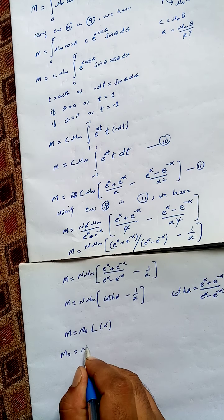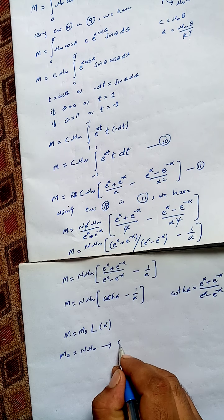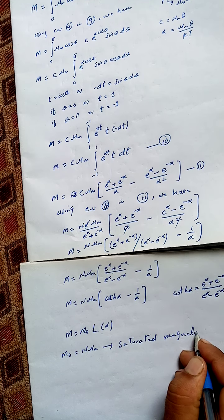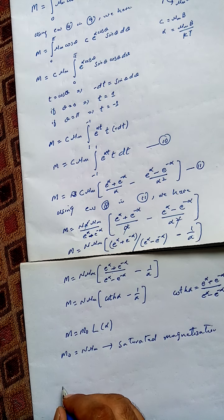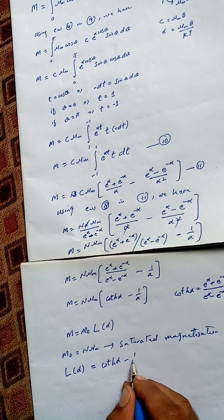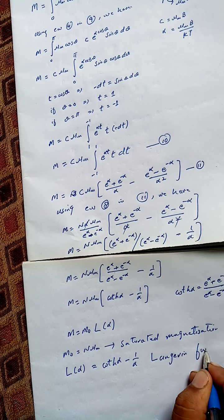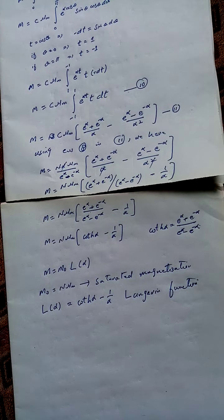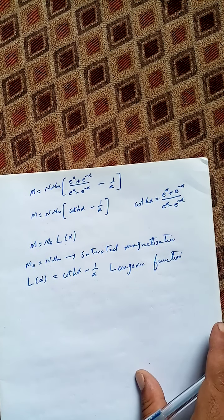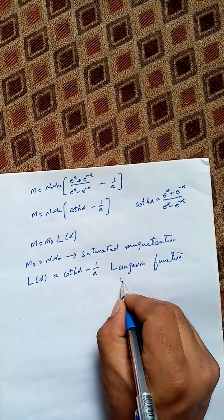This equation can be written as M equals M₀ times L(α), where M₀ equals N·μM is the saturation magnetization, and L(α) equals coth(α) minus 1/α is called the Langevin function.